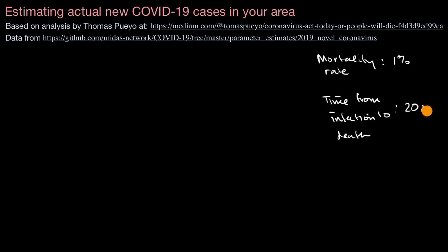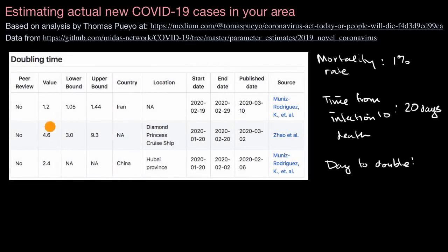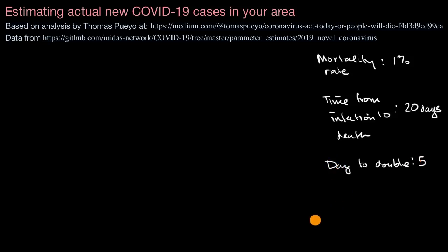The other thing we need to estimate is days to doubling — how long it takes for the infection to double in the population. This depends heavily on what the population is doing, how dense they are, and how much they're interacting. Looking at various estimates in different contexts, we can take a conservative estimate with a higher doubling rate and assume five days to double. This might be conservative, especially for places like the United States where we have not taken anywhere near the action of a place like China, South Korea, or Japan.